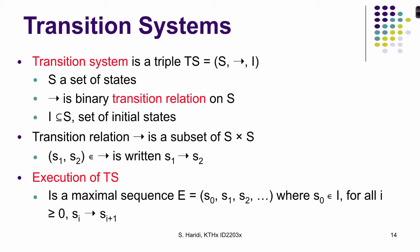Let us go through the formal definition of a transition system. A transition system is a triple consisting of: a set of states, a binary relation called the transition relation, and a set of initial states which is a subset of the set of all states.